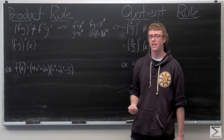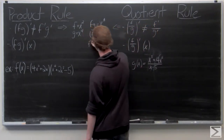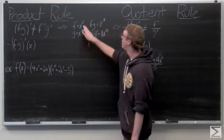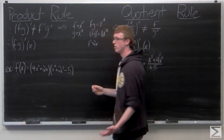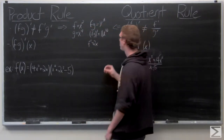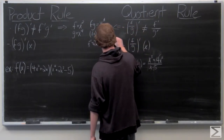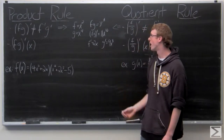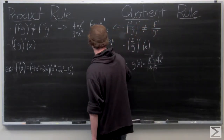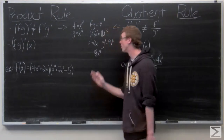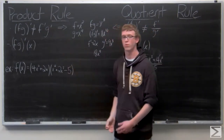Now if we instead take f prime times g prime, we have f prime equals 2x using the power rule, and g prime equals 9x to the eighth using the power rule. So f prime times g prime would be 18x to the ninth. We can see that these two don't match, and that's why we don't use this as the product rule.